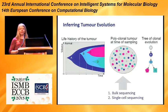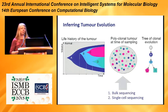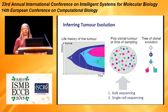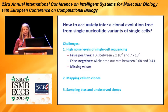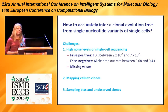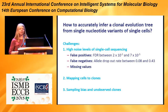In the previous sessions we've already heard a lot about methods that address this problem, most of which used bulk sequencing data, and we've also heard about the challenges there. So we're taking a different approach and instead use data derived from single cell sequencing. Our question is: how can we accurately infer a tree of clonal evolution from single nucleotide variants of single cells?